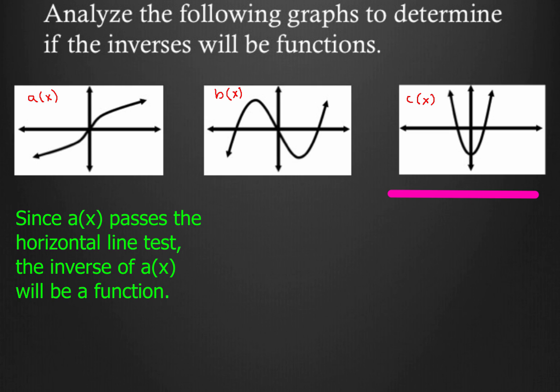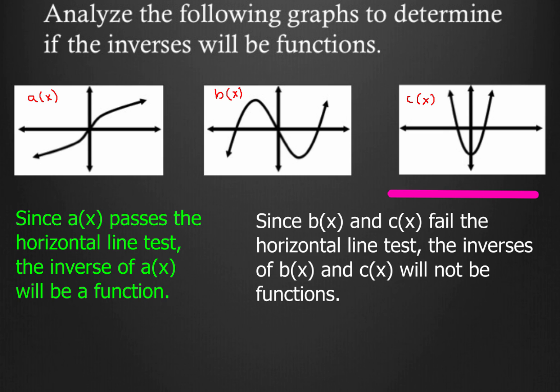But b of x and c of x, they are not quite as lucky. So we could write something like this. Since b of x and c of x fail the horizontal line test, the inverses of b of x and c of x will not be functions. That's it. That's all you got to do.